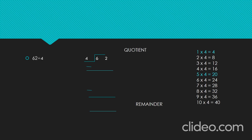Let us write 1 in the tens place of the quotient and 4 below 6. Let's subtract 4 from 6 — that is, 6 minus 4 equals 2. Let's bring down 2. Now we have 22. Let's divide 22 by 4. By using the tables of 4, we get the product less than and nearest to 22, which is 20.